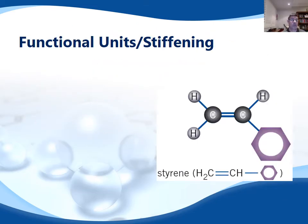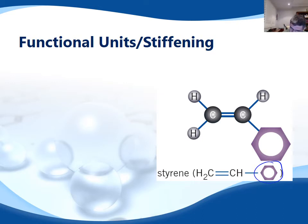Sometimes we have the addition of functional groups that have been substituted. In this case, you can see this is a benzene ring, which basically has the structure of six carbons with alternating single and double bonds.